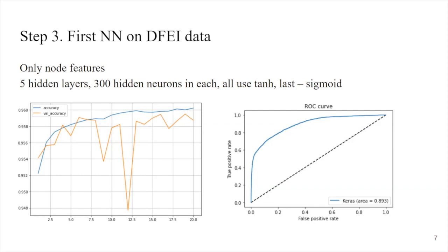That is when I realized that the dataset is highly imbalanced. The signals — when we actually have a one instead of a zero in our classification — represent only about 7% of all nodes. So we have all these particles, and only about 7% of them we are actually interested in. That is why we won't be using accuracy as a comparison metric, because it's not relevant in an imbalanced dataset.